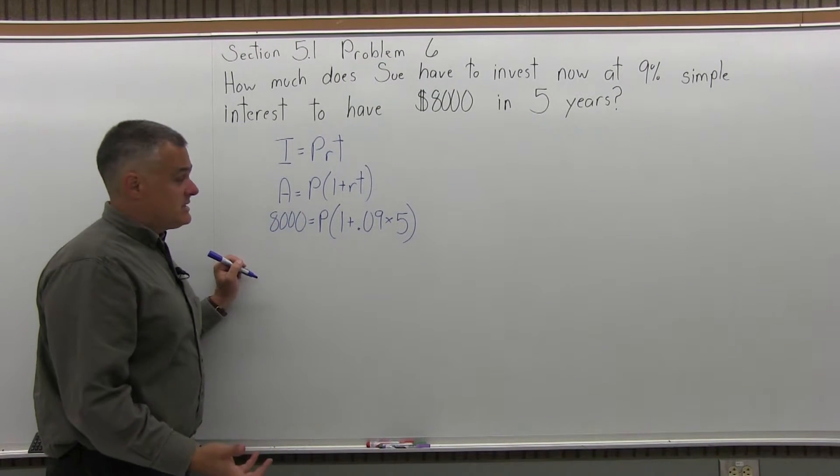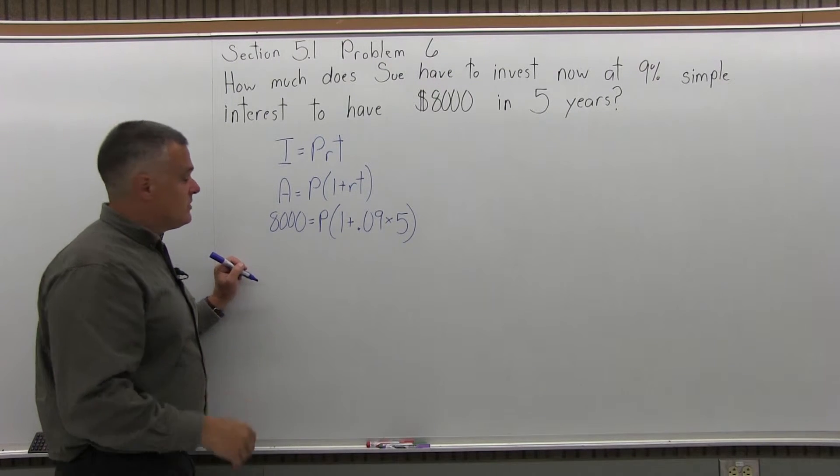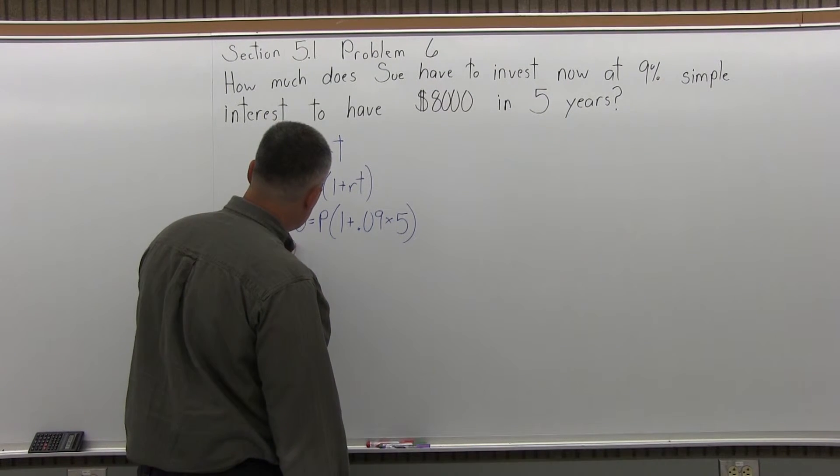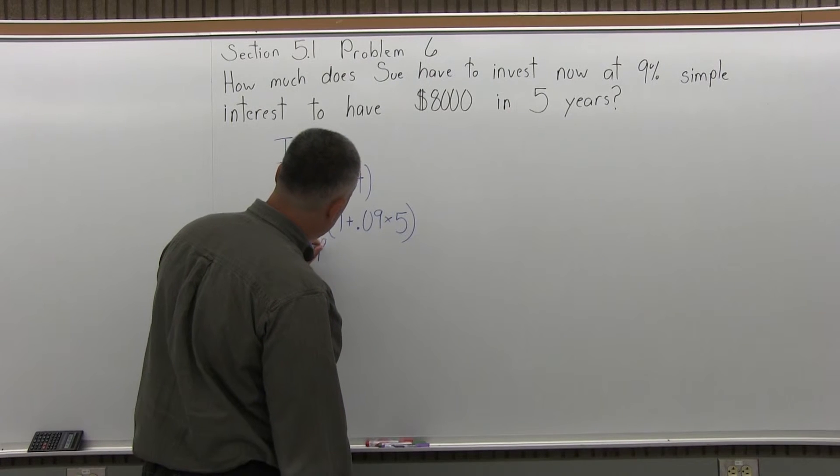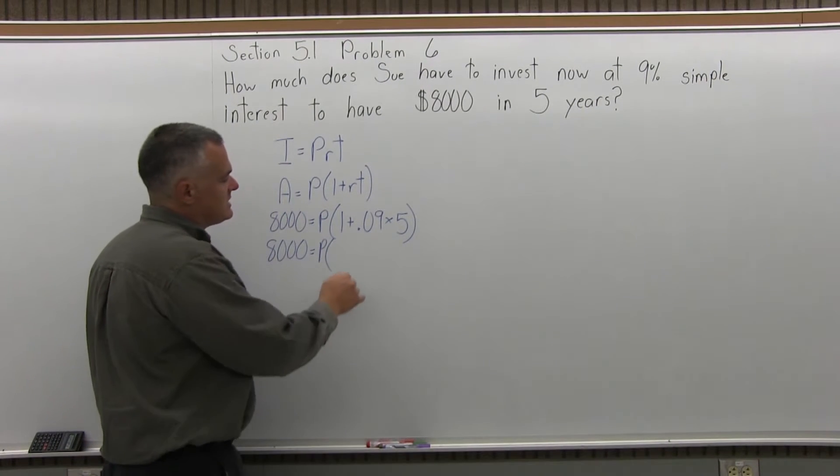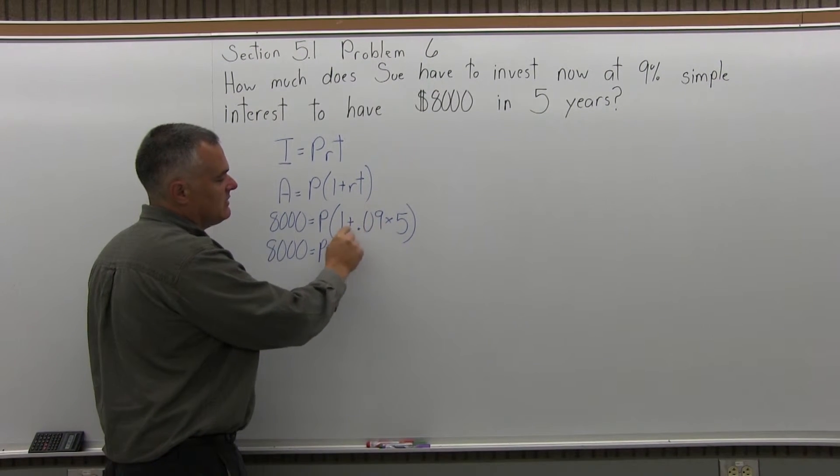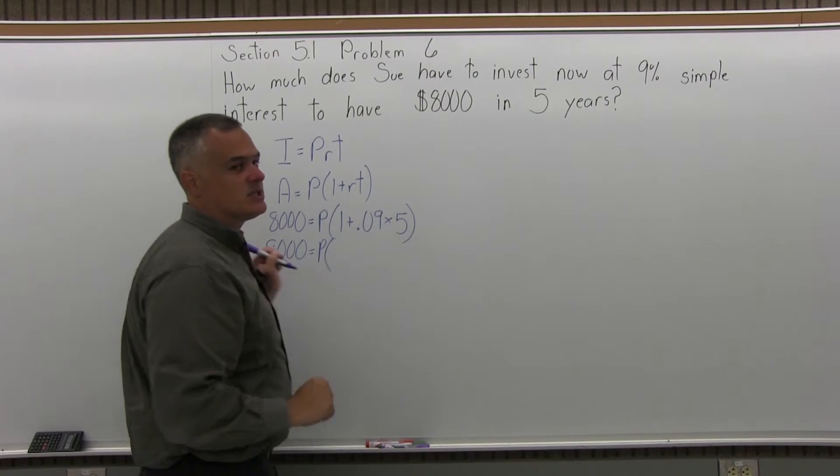And I have some parentheses in this problem. Again, any type of math, you need to do your work in parentheses first. So 8,000 equals P times. Now in the parentheses, I have an addition and a multiplication. Even though the addition is written first, the multiplication has to be done first. That's just the rule.